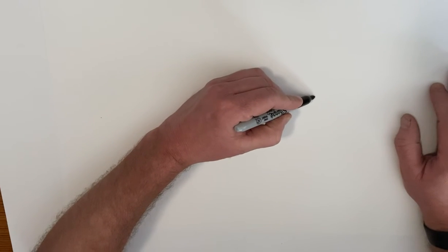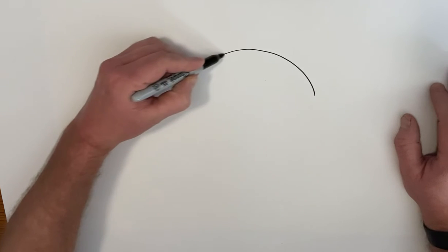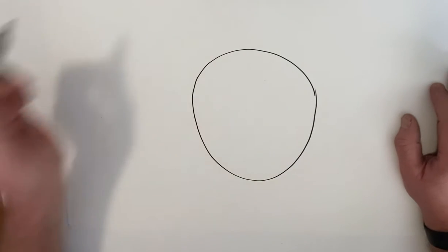First of all, a person's head is an oval or sort of like an upside down egg shape, something like that.